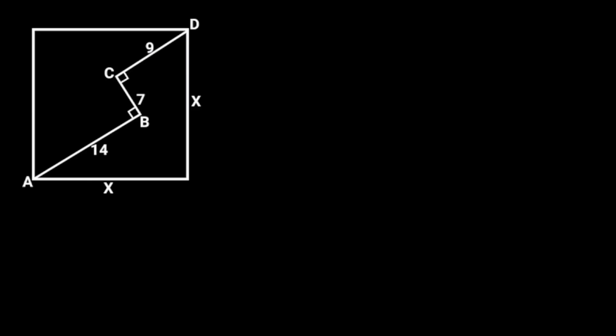This diagram is a square with line segments in it. If AB is 14, BC is 7, and CD is 9, find the length of the square.